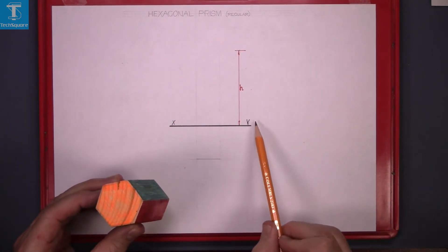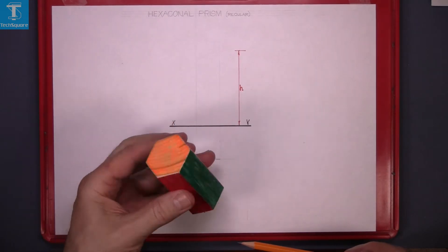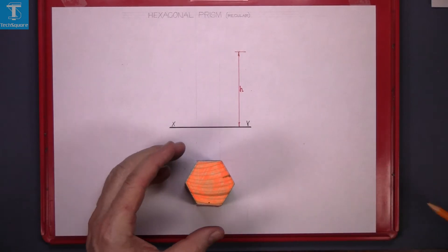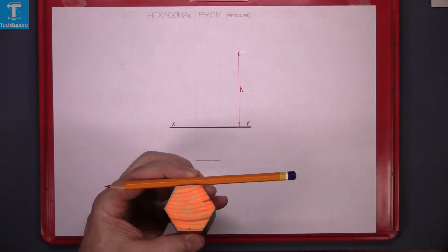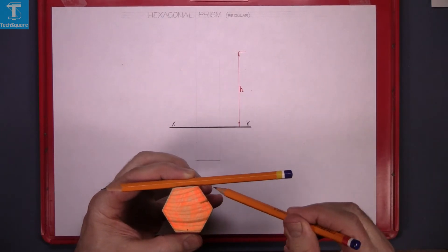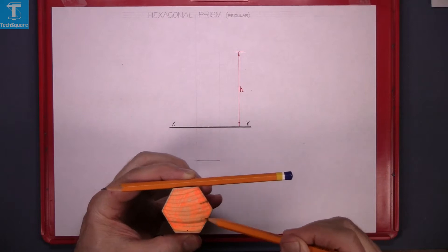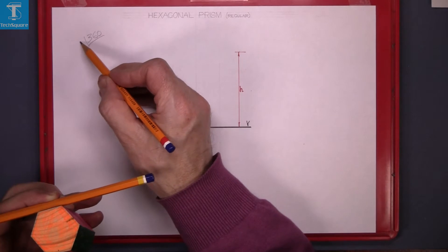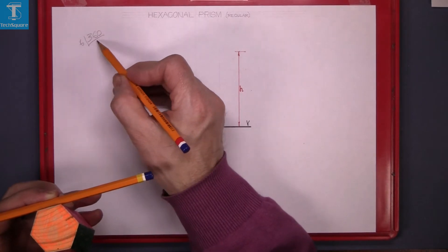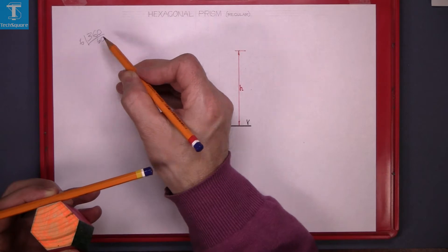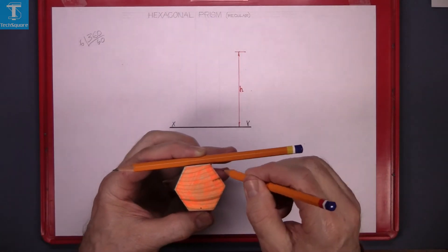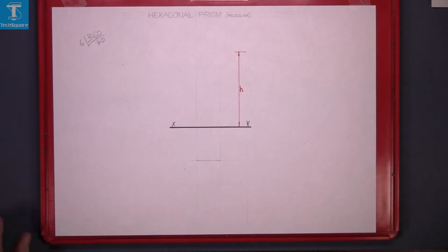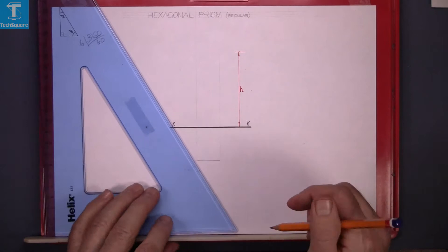We're given an XY line and we're asked to draw the plan looking directly down on it. We need to know the angle between the pencil and the side. There are six sides, so 360 divided by 6 is 60 degrees — this angle here is 60 degrees. We have a 60 degree set square, so we will use it to draw down at the angle.